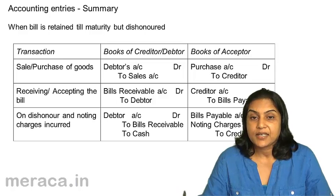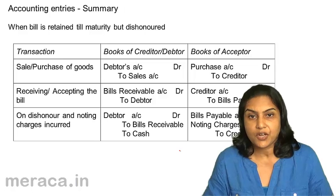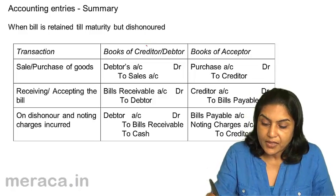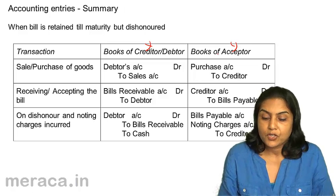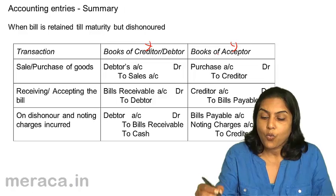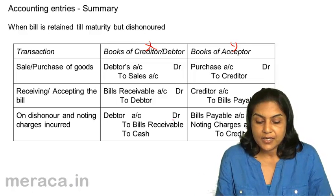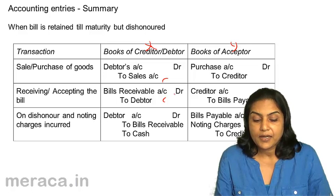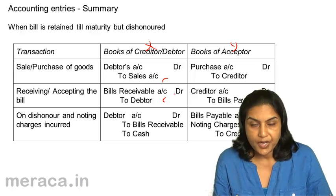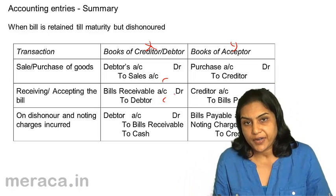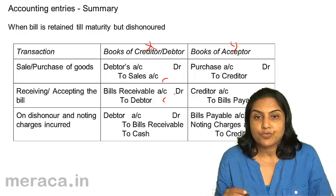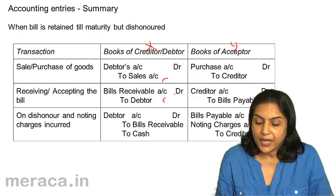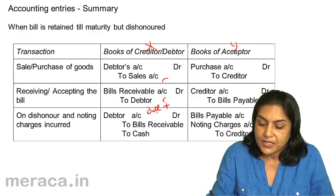What happens in case the bill is dishonoured? A quick summary of the transactions when the bill is dishonoured. In the books of X: on sale of goods, Y's account debit to sales. On receiving the bill: bills receivable account debit to debtor. But if the bill is dishonoured and noting charges are incurred, then Y is responsible for both the bill amount as well as the noting charges. So it becomes debtor's account debit with bill amount plus noting charges.